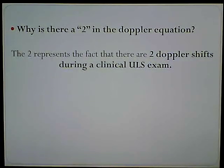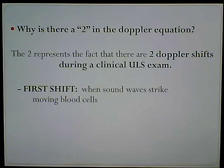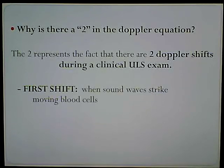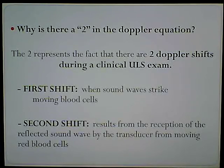Why is there a 2 in the Doppler equation? The 2 represents the fact that there are actually two Doppler shifts during a clinical ultrasound exam. The first shift occurs when sound waves from the transducer strike moving blood cells — that interaction alone is enough to create a Doppler shift. The second shift results from the reception of the reflected sound wave by the transducer from the moving blood cells — when we get it back. It's a going and coming shift.